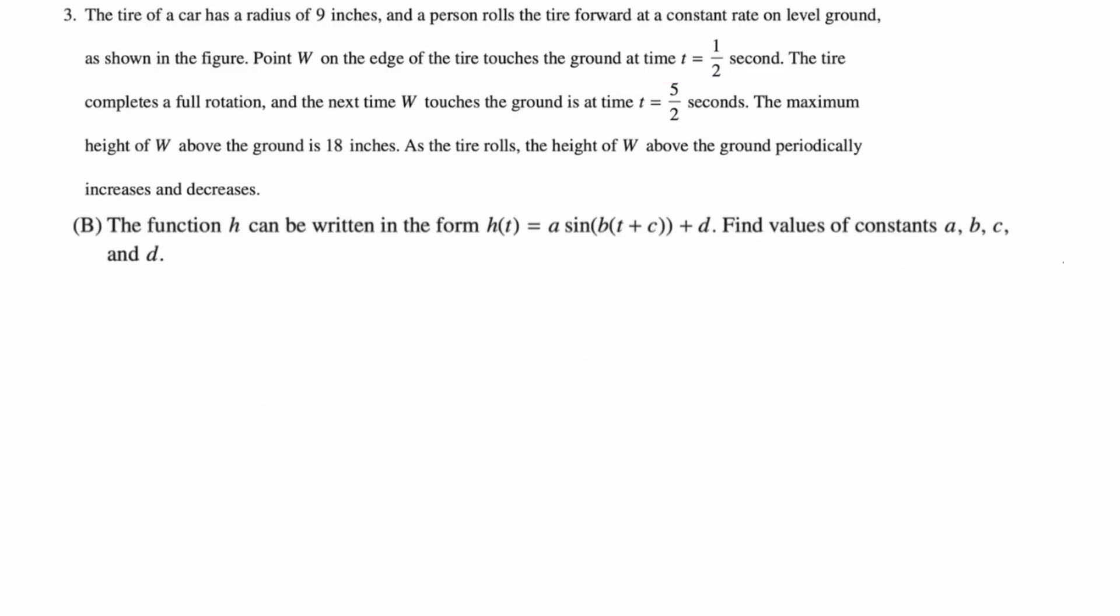The function h can be written as h(t) = a sin(b(t + c)) + d. Find the values of a, b, c, and d. So this is what we had. We know these things. We had this point was (0, 9). We had all that.